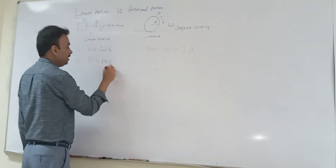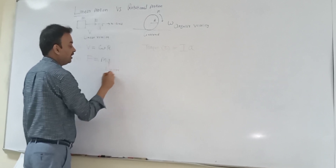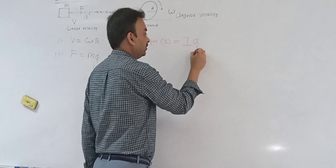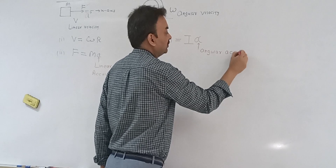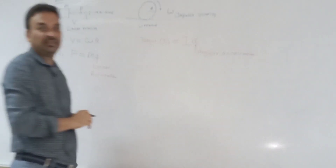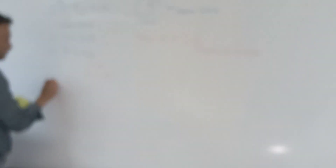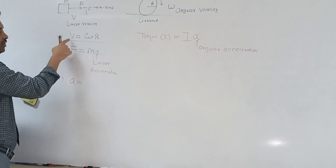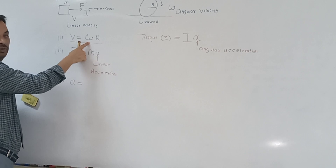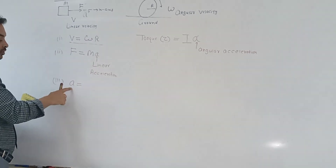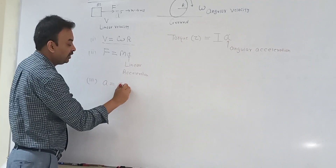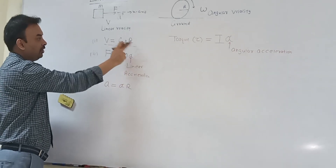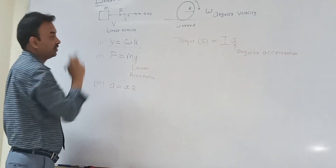Now what is the relation between linear acceleration and angular acceleration? Just like v equals omega times r, we have linear acceleration a equal to angular acceleration alpha times radius r. The formulas are matching — linear velocity equals angular velocity times radius, and linear acceleration equals angular acceleration times radius.